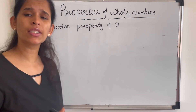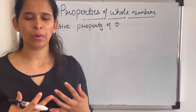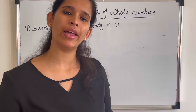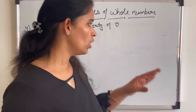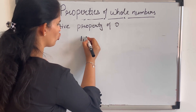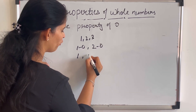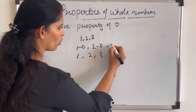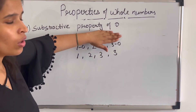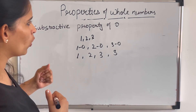The fourth property is the subtractive property of zero. Zero holds this power: if we subtract 0 from any whole number, like 1, 2, or 3, the value remains the same — it won't change. So zero has the subtractive property in whole numbers.